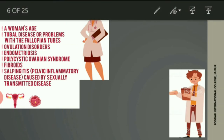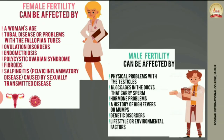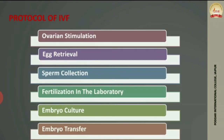Male infertility factors include: physical problems with the testes affecting sperm production; blocked ducts that carry sperm; hormonal imbalance affecting sperm production; genetic disorders; and lifestyle and environmental factors such as smoking and excessive alcohol consumption. These are the main infertility factors.